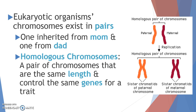All the DNA that humans and other eukaryotic organisms have exists in pairs, because we get our DNA from two different sources: our mom and our dad. Because we get two sources of genetic information, our chromosomes form homologous pairs during cell division. A homologous pair is defined as a pair of chromosomes — one from mom, one from dad — that are the same length, meaning the same number of nitrogen bases long.